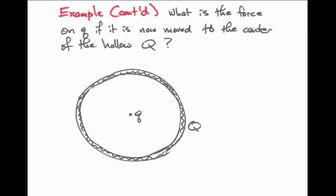Let us consider a similar question: what if charge little q is located at the center of a big hollow sphere with charge capital Q distributed uniformly over it? We can again divide the big ball into little elements of charge. Element q1 is at distance r1 from little q and exerts force f1 along radial vector r1. But there is also an element of charge directly opposite that exerts a force along r2, canceling f1. Continuing all the way around — taking elements 3 and 4, and so on — each pair produces equal and opposite forces f3 and f4, so the net force is simply zero.